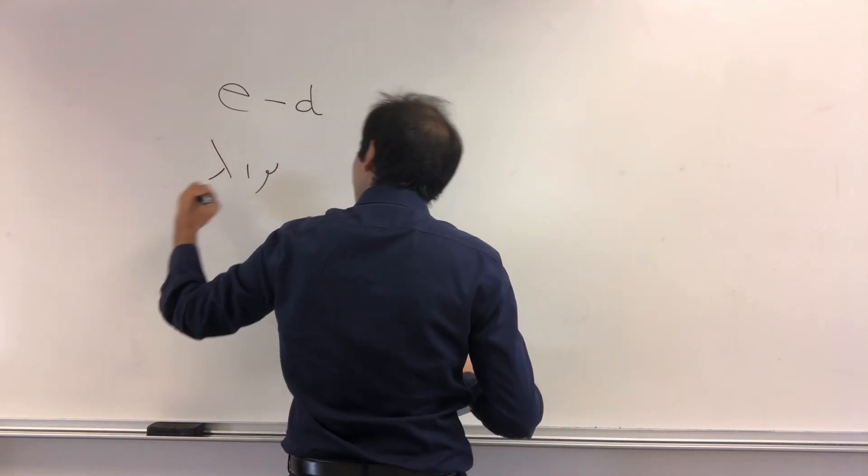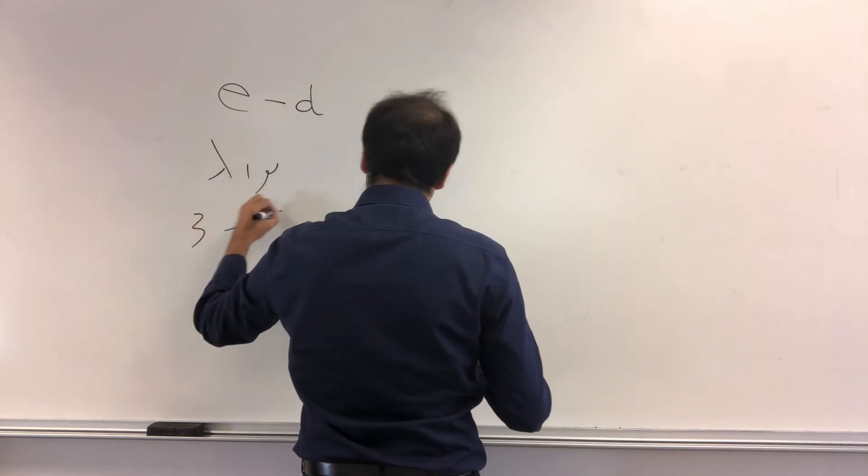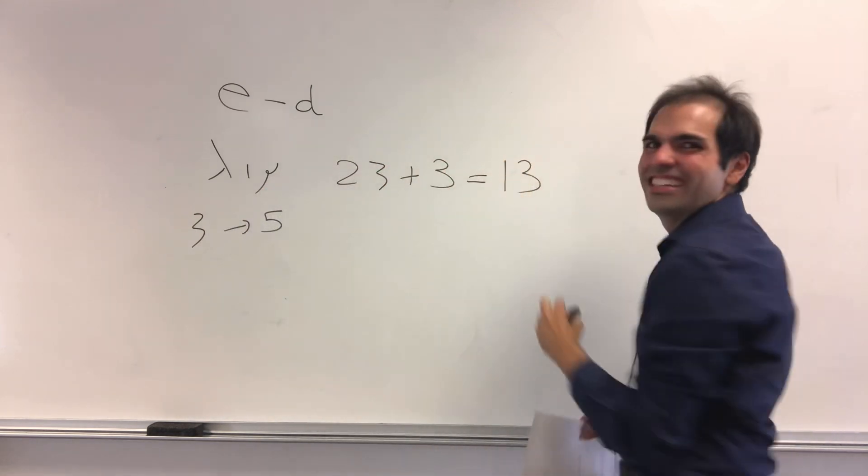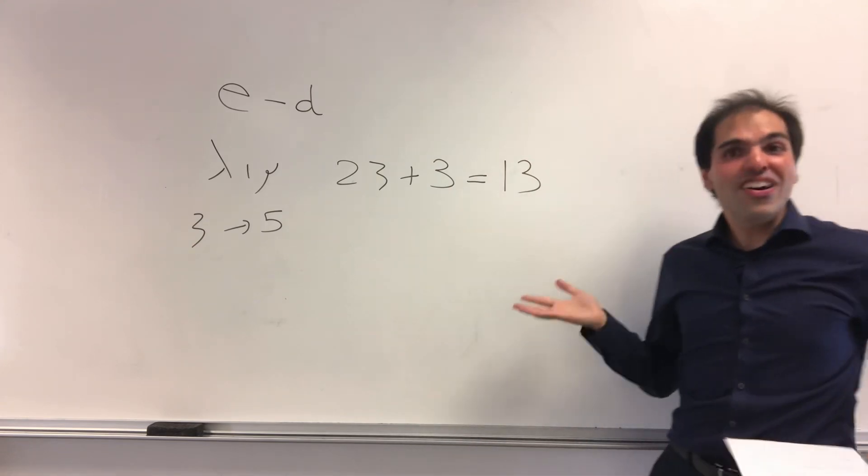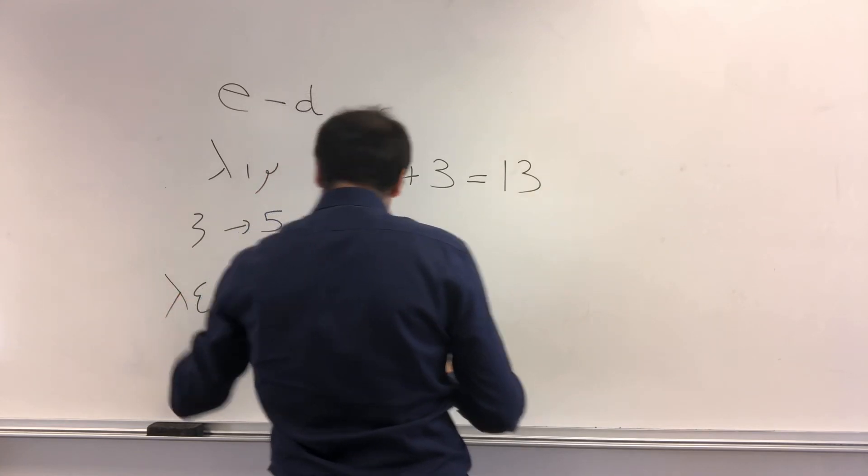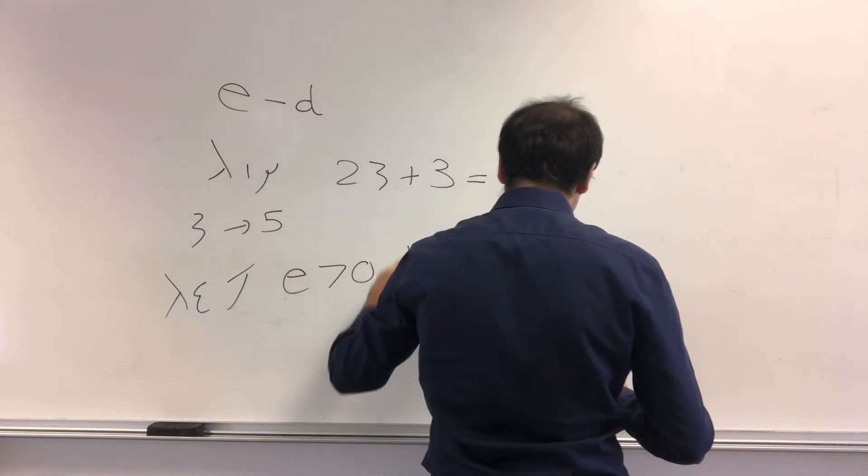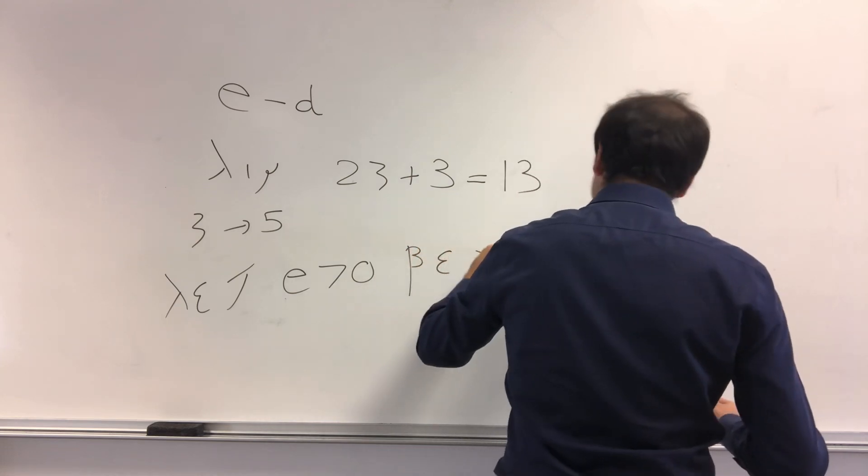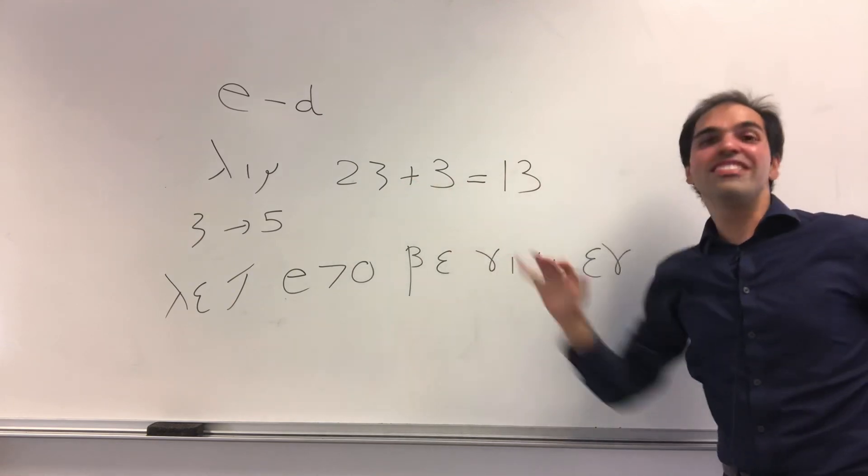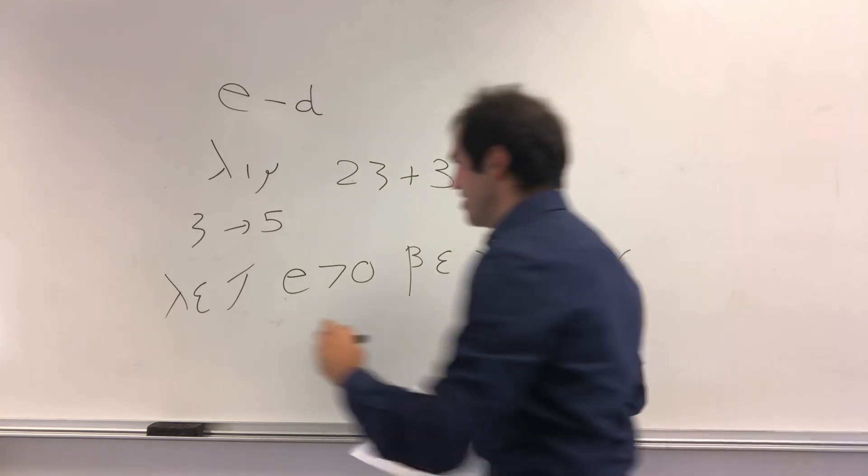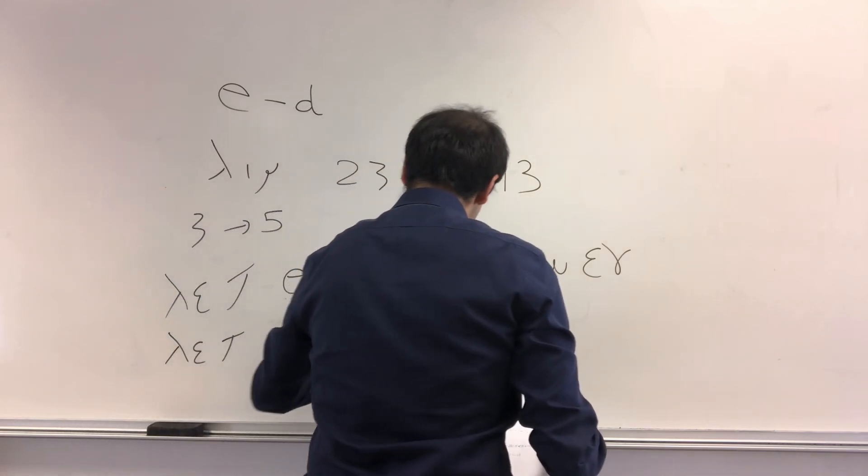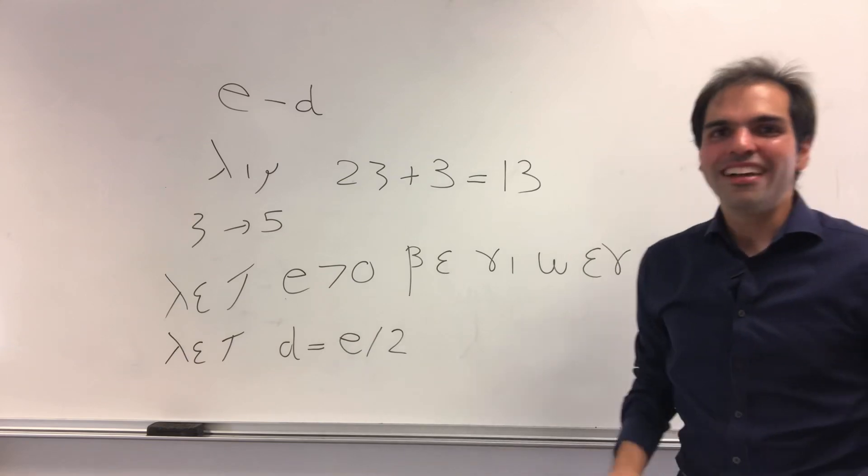Alright, so as usual, let epsilon be given. Well, epsilon is e here, so let's epsilon be given. And then, let's choose delta to be epsilon over 2, so let delta be epsilon over 2, so e over 2.